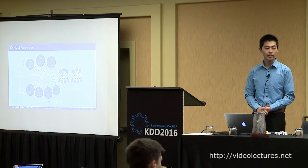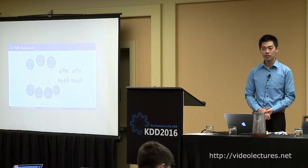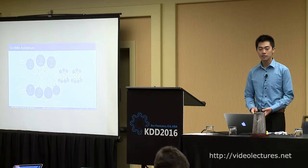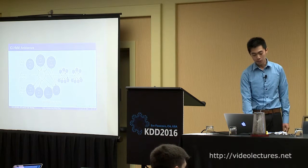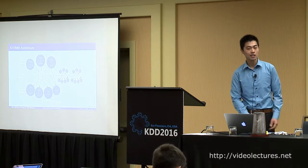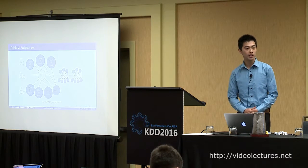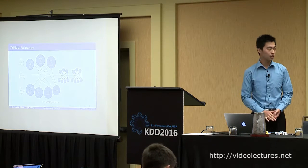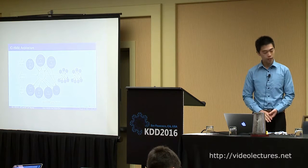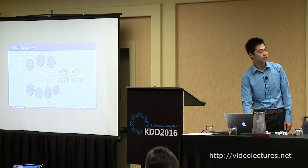This is the LHMM architecture. We assume that the hidden activity depends not only on the previous activity but also on contextual information such as time of day, day of week, and information about past activities. We also assume the location and duration choice of the activity depends on the hidden activity as well as the contextual information.